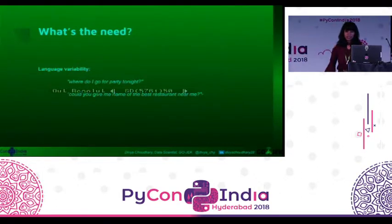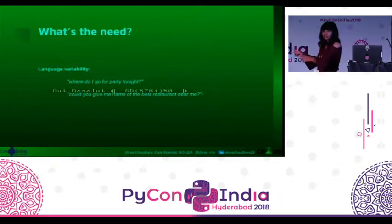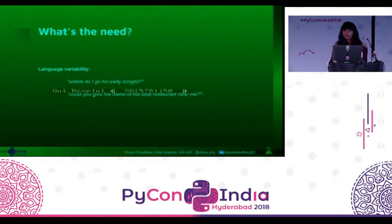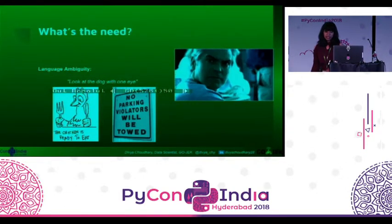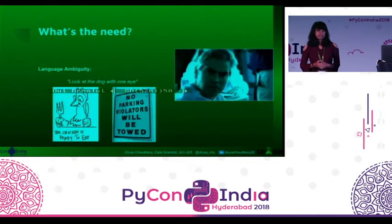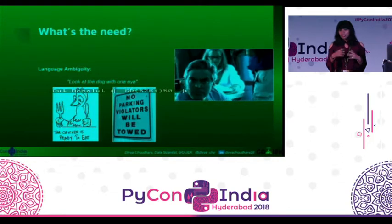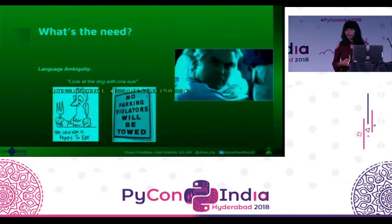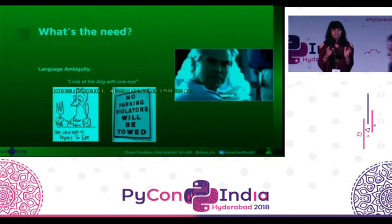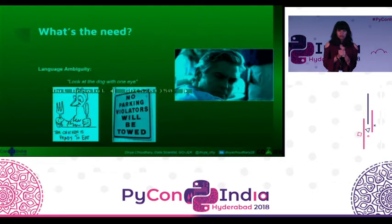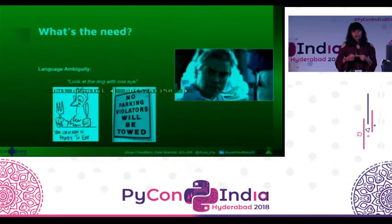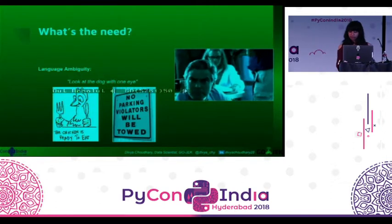For example, these two sentences — 'where do I go for a party tonight?' or 'could you give me the name of the best restaurant?' — are essentially the same sentences. But how does a language model understand that the answer to these should be the same? A probable application could be found in chatbots. The other thing making language models more complicated is language ambiguity. Sentences like 'look at the dog with one eye' or 'the chicken is ready to eat' — you don't know how to understand them. Should you keep your eye closed while looking at the dog, or does the dog have one eye? Imparting this knowledge to a language model is another challenge.